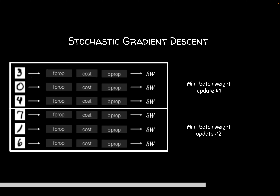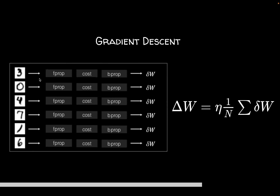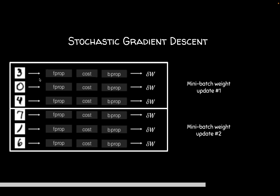Therefore, what people use is called stochastic gradient descent — you don't use all your data points, only a subset. It can be just one data point at a time, but that is too noisy and inefficient. Instead, there is something in between: we take a set of data points called a mini-batch, and the most common form of optimization is called mini-batch stochastic gradient descent.